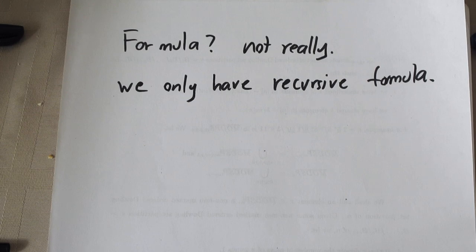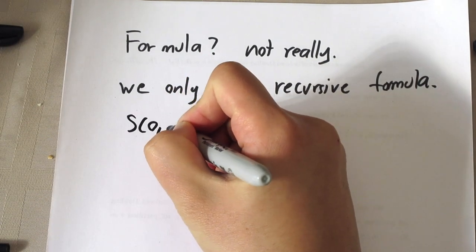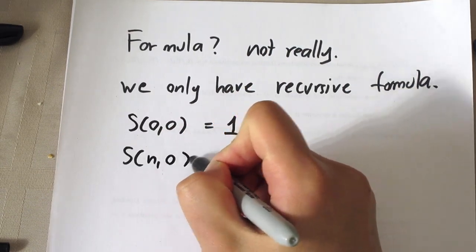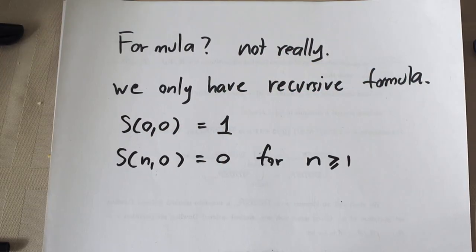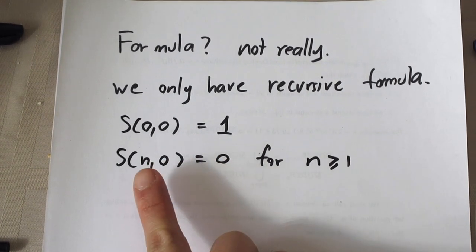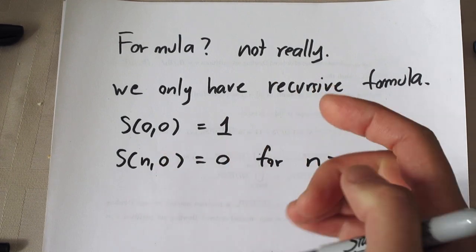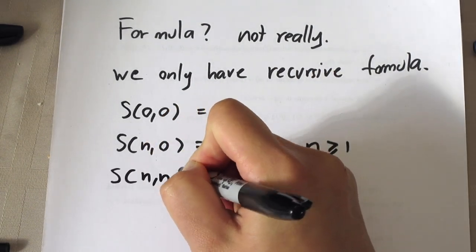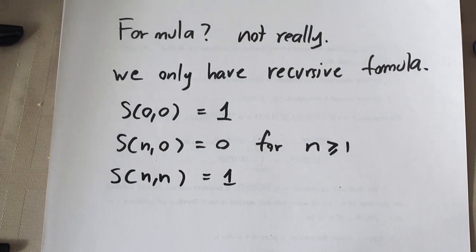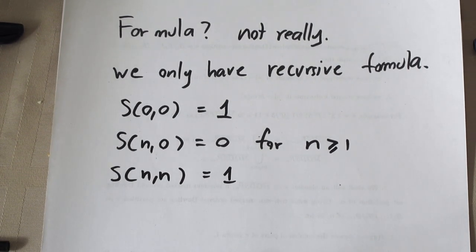To use a recursive formula, you always need base cases. The base cases are: S(0,0) = 1, S(n,0) = 0 for n≥1 (if you have n objects and no boxes, there's no way to partition), and S(n,n) = 1. This last one holds because with n objects and n boxes, each box must contain exactly one object, and since boxes are identical there's only one way.